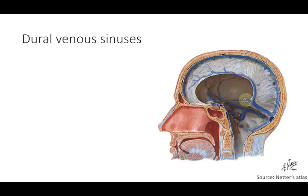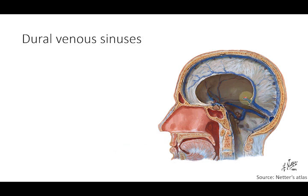This picture shows the dural venous sinuses. The great cerebral vein of Galen — VOG — is this short vein, and it terminates at the point where the inferior sagittal sinus continues as the straight sinus. So the inferior sagittal sinus together with the vein of Galen forms the straight sinus, which lies at the midline. The vein of Galen is a single midline vein.